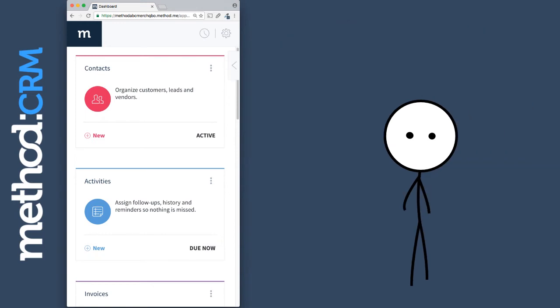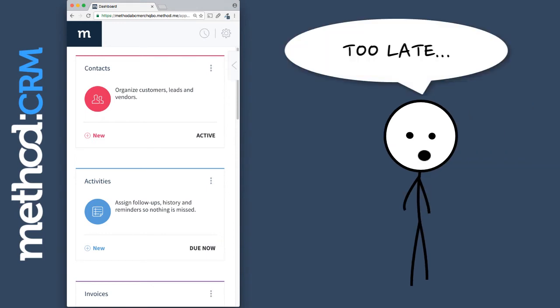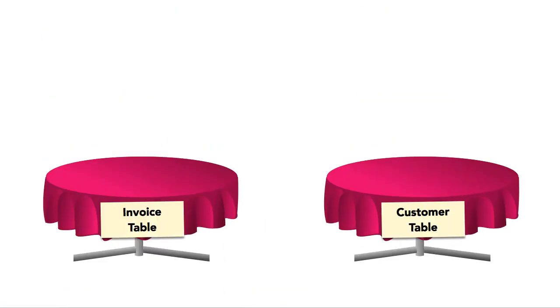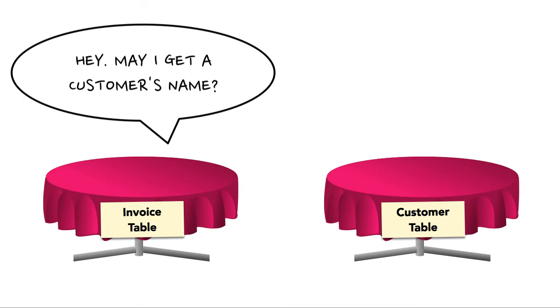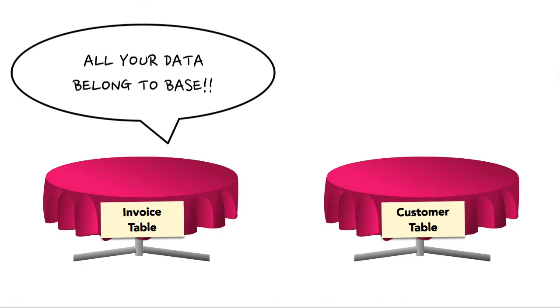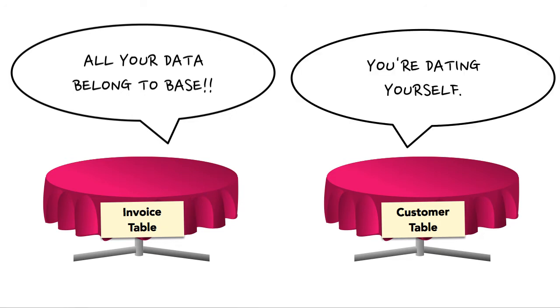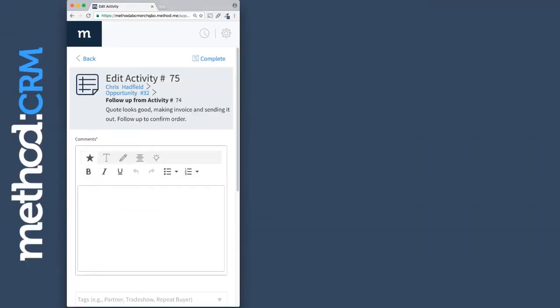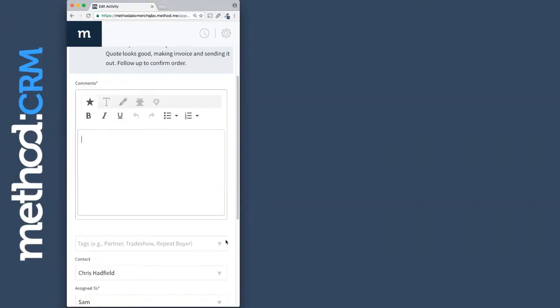One last thing I will touch on that may cause some cerebral harm: tables can access one another. Since they're all in the same database, the data is accessible to all. What does that mean? Let me show you by example in Method CRM.